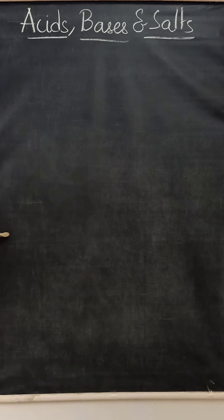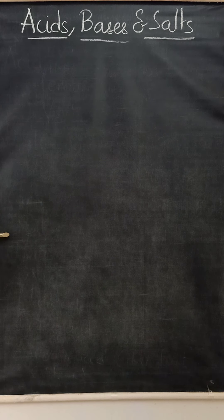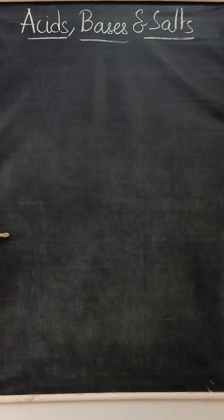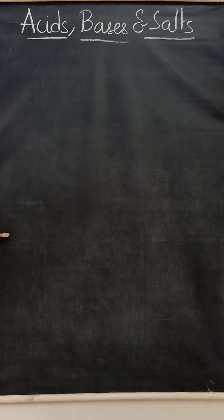In our daily life we eat a lot of substances. Will they taste similarly? Definitely not. Why do they taste differently? Some are sweet, some are bitter, some are salty. The reason is simple - they are different in their chemical nature. The chemical nature of the substances will determine their taste. Today we are going to read about the different types of substances based on their chemical nature, that is acids, bases and salts.